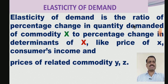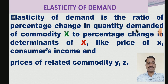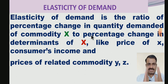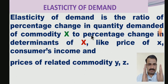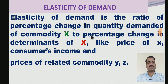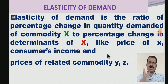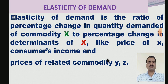Elasticity of demand is the ratio of percentage change in quantity demanded of X to percentage change in a determinant of X. It is the ratio between two factors: change in quantity demanded and change in determinants.